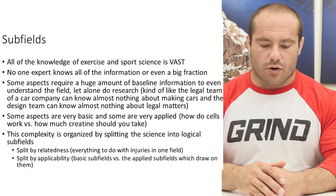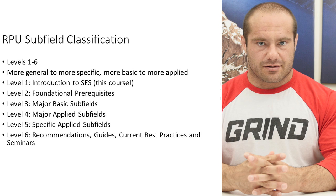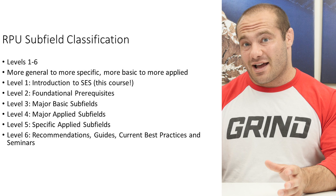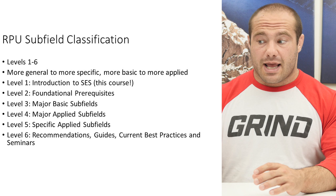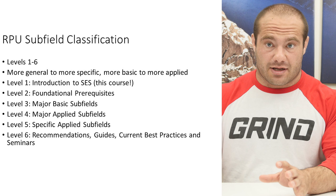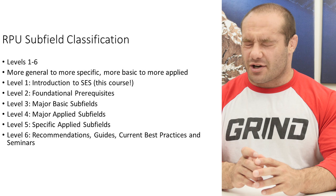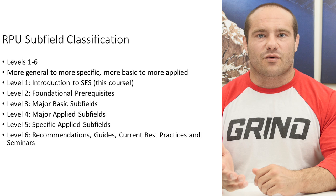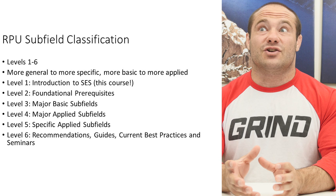To help you with this logical structure, RPU has developed a subfield classification system with six levels. Levels go from more general to more specific, and from more basic research to more applied. Level one has only one course in it: Introduction to Sport and Exercise Science — this course you're taking right now. You have to have level one to familiarize yourself with the field before going on to anything else. This is the first step.